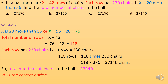Now x is 20 more than 56, so x equals 56 plus 20 equals 76. Total number of rows are x plus 42, so substituting x as 76 we get 76 plus 42 equals 118. Each row has 230 chairs, so 118 rows equals 118 times 230 equals 27140 chairs. The total number of chairs in the hall is 27140. So D is the correct option.